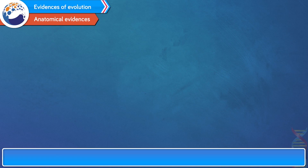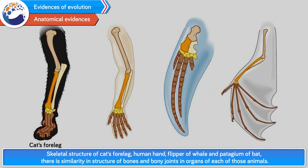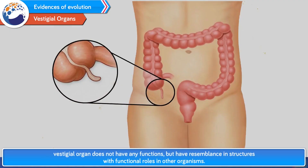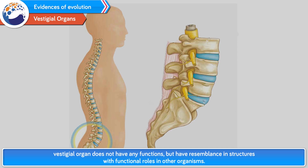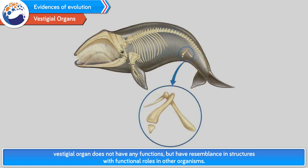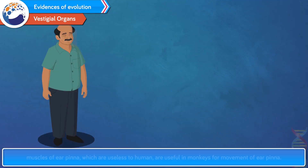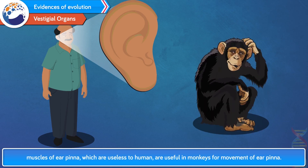Anatomical evidences: If you observe the skeletal structure of a cat's foreleg, human hand, flipper of a whale, and patagium of a bat, there is similarity in the structure of bones and bony joints in the organs of each of these animals. However, the use of these organs is not similar in each of these animals. Vestigial organs: A vestigial organ does not have any function, but has resemblance in structure with functional organs in other organisms. An example is the human appendix, which is useless to humans but is a useful and fully functional organ in ruminants. Also, muscles of the ear pinna, which are useless to humans, are useful in monkeys for movement of the ear pinna.